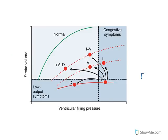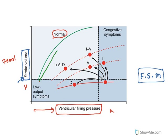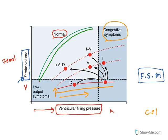Let us understand the Frank-Starling mechanism of the heart. Cardiac efficiency is determined by stroke volume — the volume of blood that comes out of the heart per stroke. In a healthy heart it is around 70 ml per contraction. On a graph with stroke volume on the y-axis and ventricular filling pressure on the x-axis, in a normal heart, increasing ventricular pressure causes stroke volume to rise rapidly. Whereas in congestive heart failure, even though pressure is increasing, there is no rise in stroke volume — that is what results in decreased cardiac output.